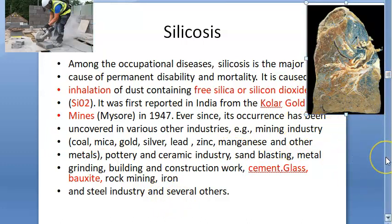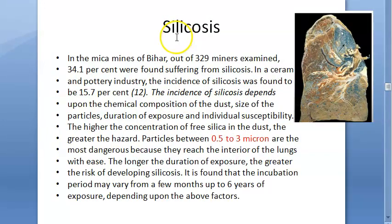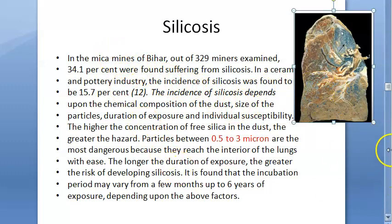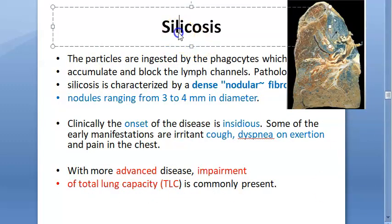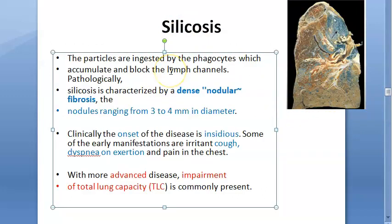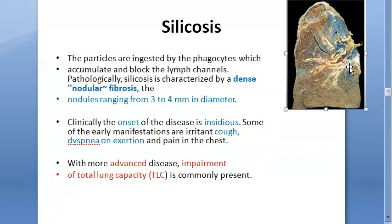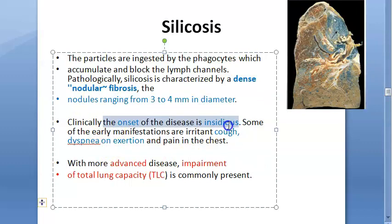Over a period of inhalation, the lung develops nodules and fibrosis — these are the key words for silicosis. The inhaled particles are ingested by phagocytes, accumulate, and block the lymph channels, resulting in dense nodular fibrosis. The size of the nodules is also an important detail.